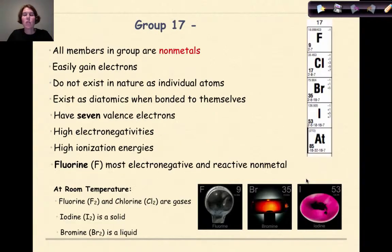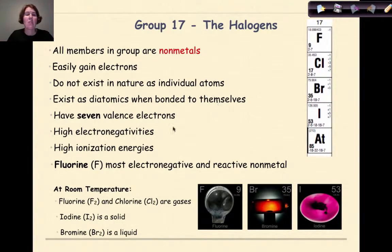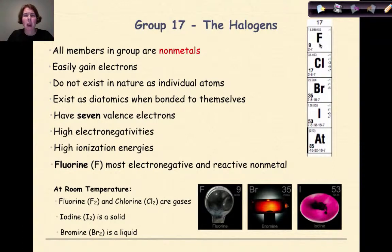Group 17 is known as the halogens, and all the members of this group are non-metals. They easily gain electrons and do not exist in nature as individual atoms — they exist as diatomics when bonded to themselves. They have seven valence electrons, high electronegativities, and high ionization energies. Fluorine is the most electronegative and reactive non-metal on the periodic table, with an electronegativity of four. At room temperature, fluorine and chlorine are gases, iodine is a solid, and bromine is a liquid.